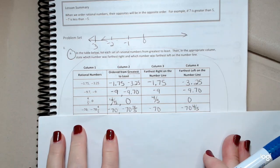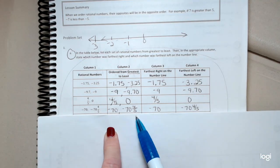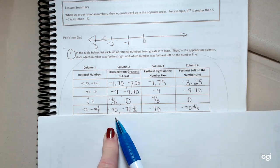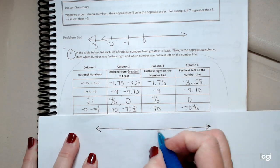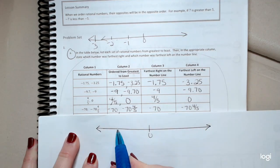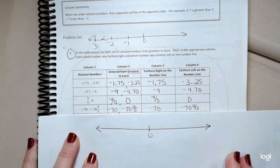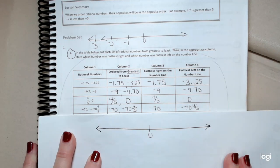The next one, we have negative 70 and negative 70 and four-fifths. Well, which is greater? Which one's further to the right? Negative 70 is our greater number. So on my number line, if I have zero, negative 70 is going to be closer to zero than negative 70 and four-fifths.